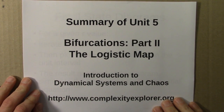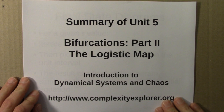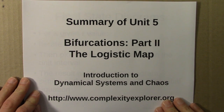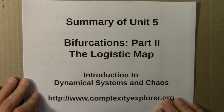Let's summarize Unit 5. This was the second of two units on bifurcations and bifurcation diagrams. This unit focused exclusively on the logistic map, the iterated logistic function.